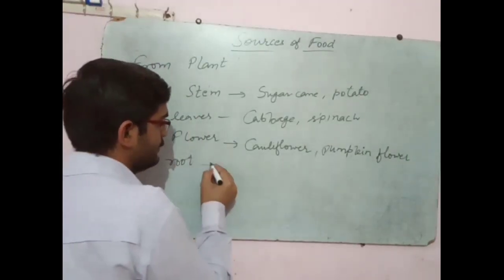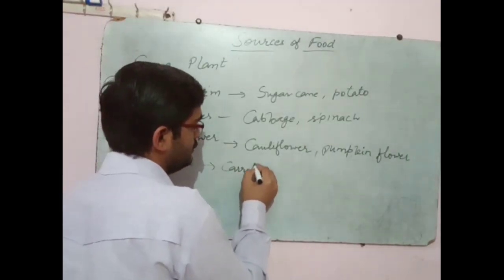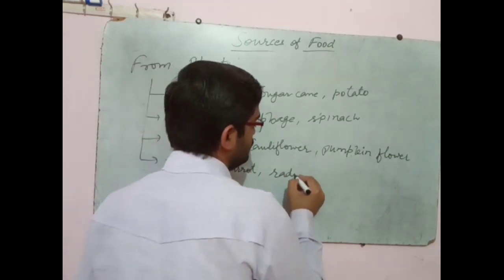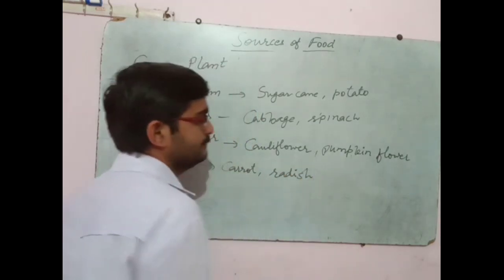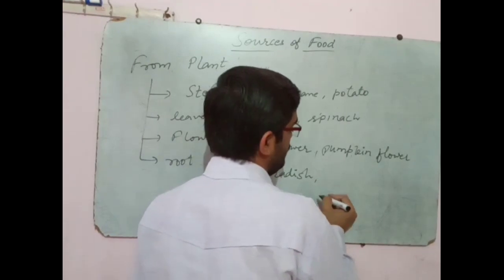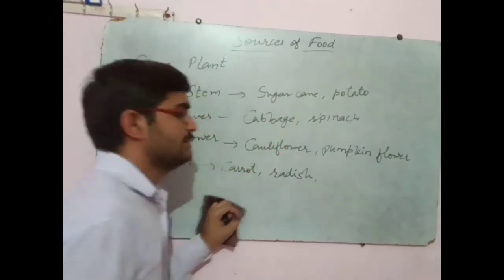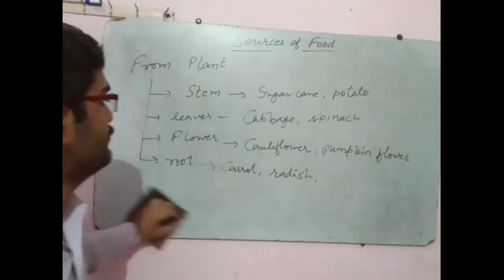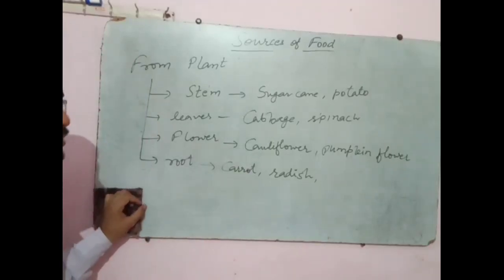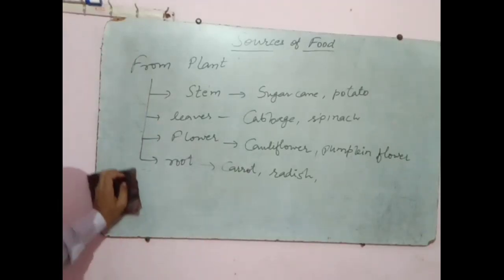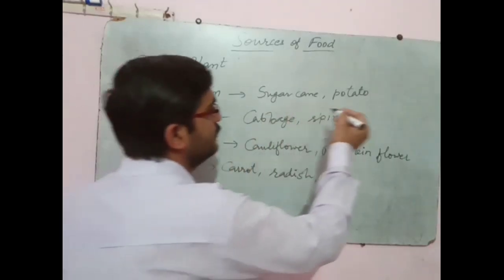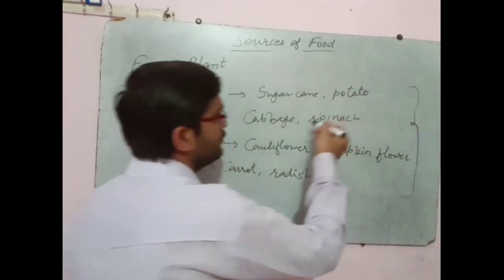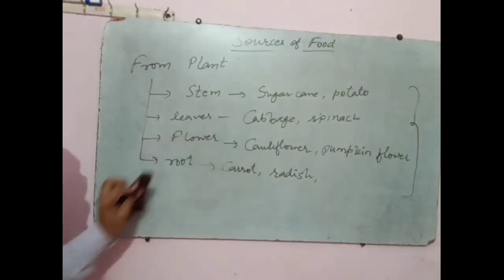From roots: carrot, radish, and some more food items are there which we get from roots also. These are the different types of food which we get from plants, and the different parts of the plants which we eat as food.